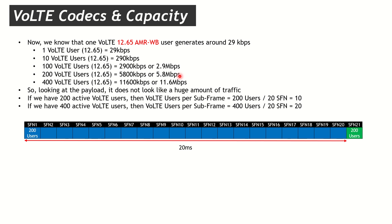For 200 VoLTE users needing 5.8 Mbps, we also need to consider how many users are sent per subframe. If all 200 users sent packets in subframe 1, the next packet wouldn't come until subframe 21 due to the 20 ms periodicity. Instead, we distribute the 200 users across all 20 subframes for a better capacity approximation.